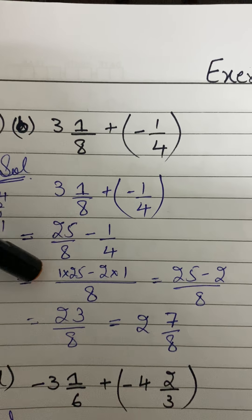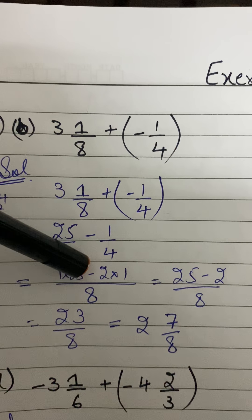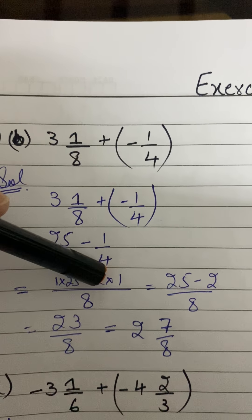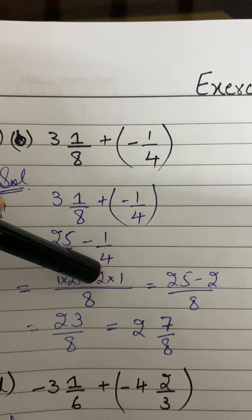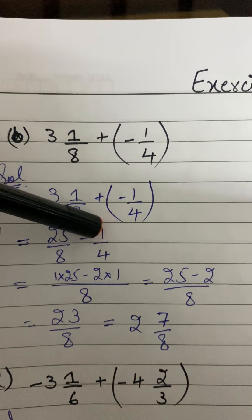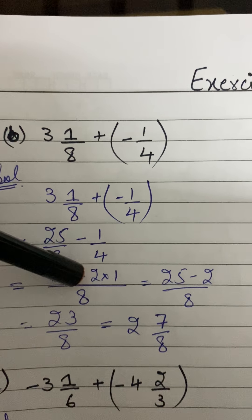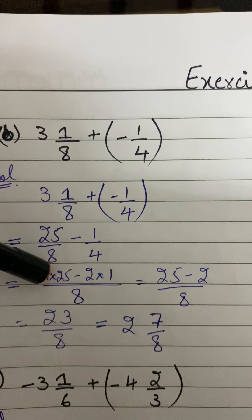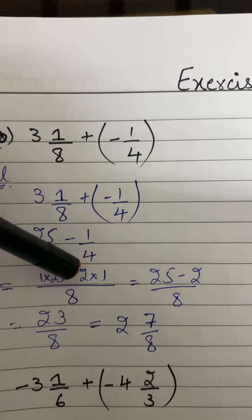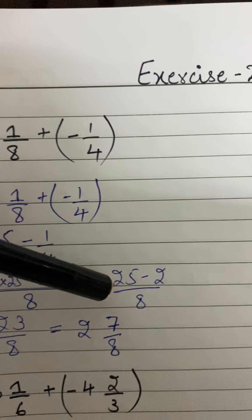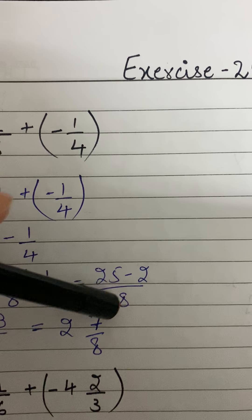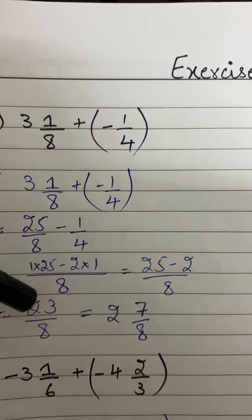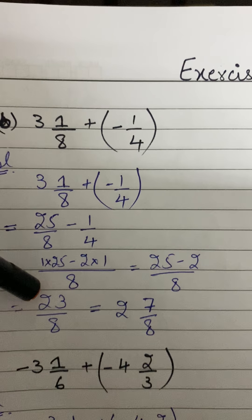Next step: 8 ones are 8, so multiply the numerator 25 by 1 — giving 25. Then 4 twos are 8, so we write 2 and multiply by numerator 1 — giving 2. So we have 1 times 25 minus 2 times 1. That gives us 25 minus 2, which is 23, over 8.